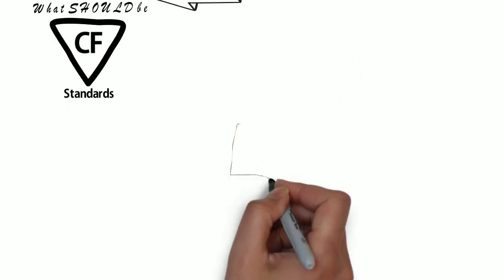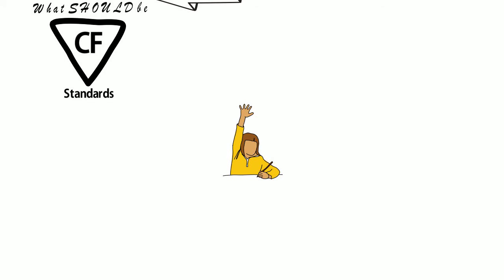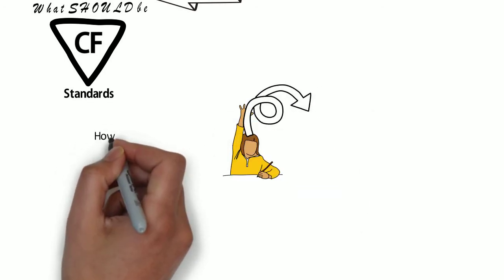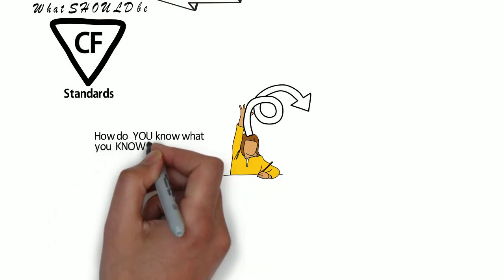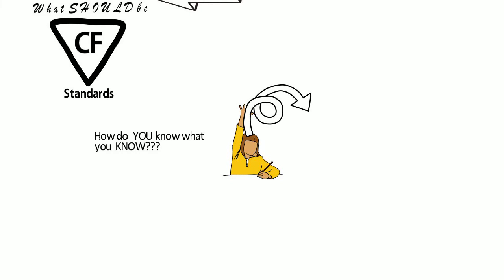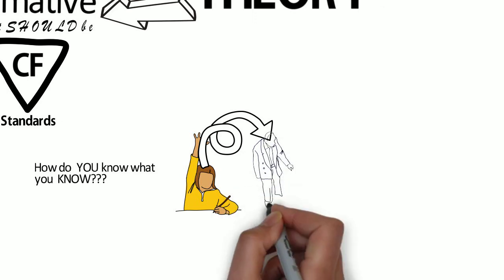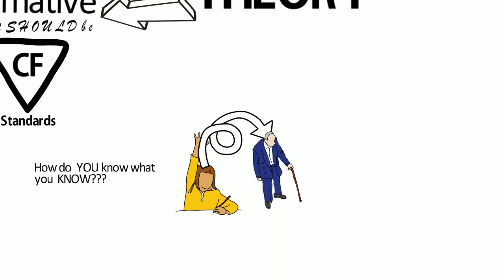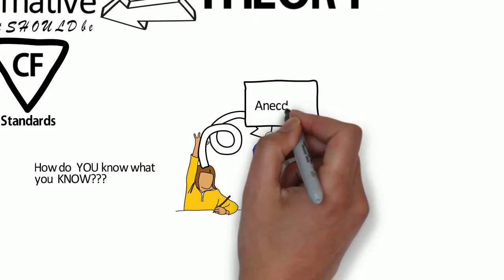We can also think about theory in terms of the knowledge that you have that guides your individual behavior. It's a useful exercise to reflect on how you know what you know, because what we know is not always right. When I was learning about the GFC, I came across a VideoScribe video, like what we're using here. I really enjoyed watching it, and based on my limited experience, I thought, wow, that's much better than a PowerPoint presentation. This is an example of anecdote.